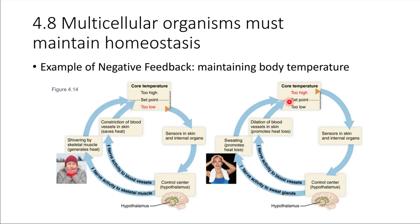You can also look at the other extreme — what happens if we get too hot. Essentially the sensor communicates with the hypothalamus again, the control center. But the control center this time is going to activate some other things. The control center is able to distinguish whether we're too far above or too far below the set point, so a different set of effectors will be activated in that case.